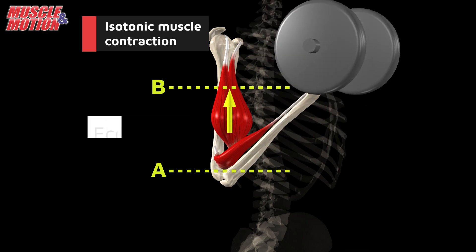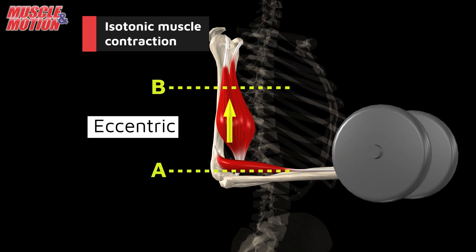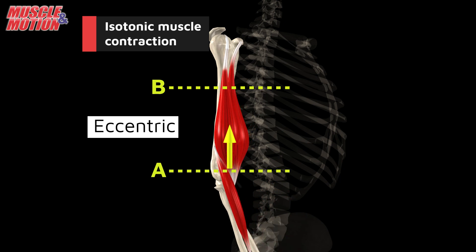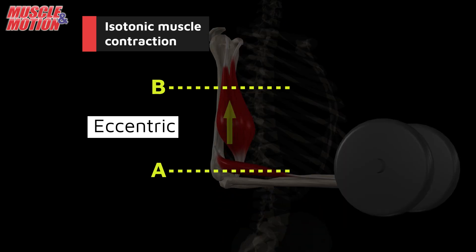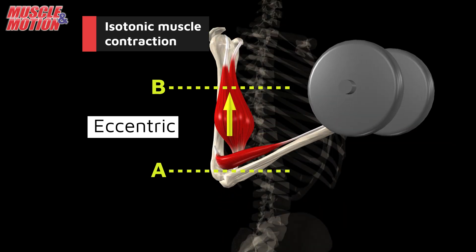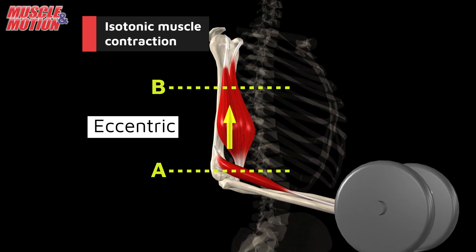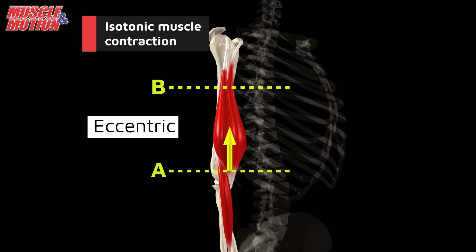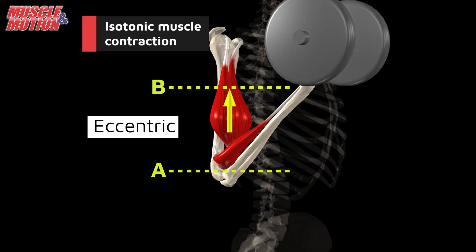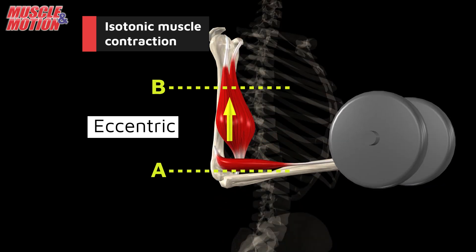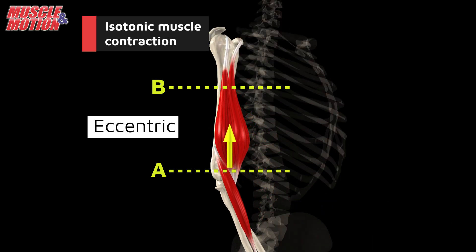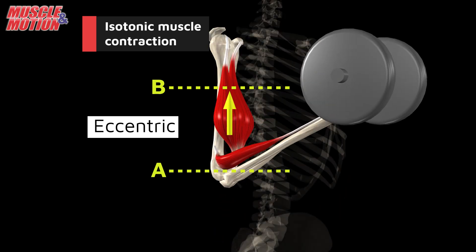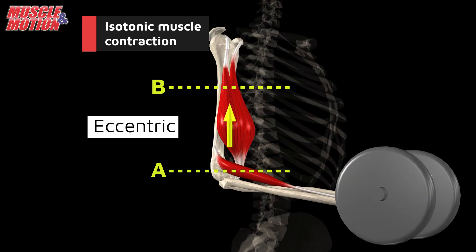Eccentric contraction is the opposite, meaning the muscle is lengthened under load. In the same bicep curl example, eccentric contraction occurs when you lower and extend your elbow, and the biceps lengthen under load.